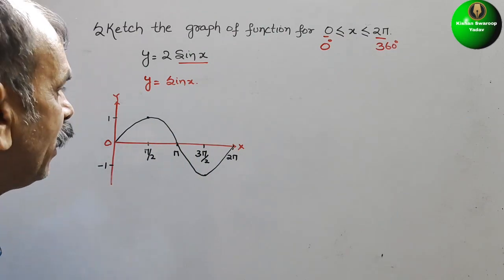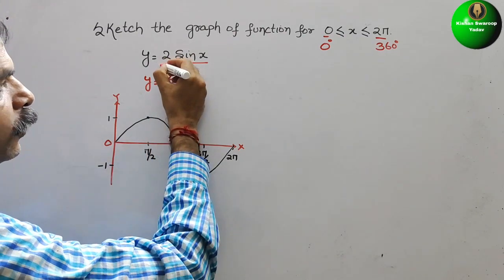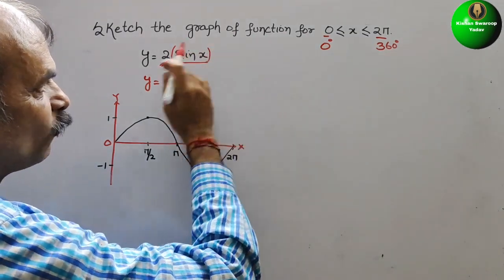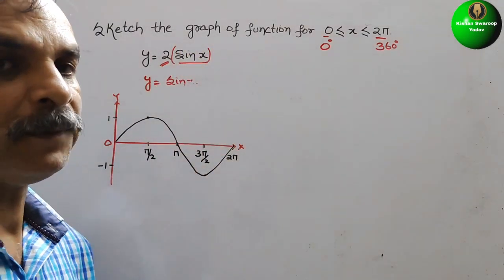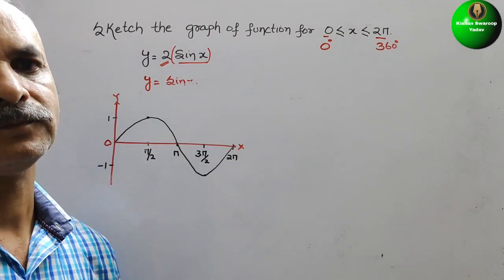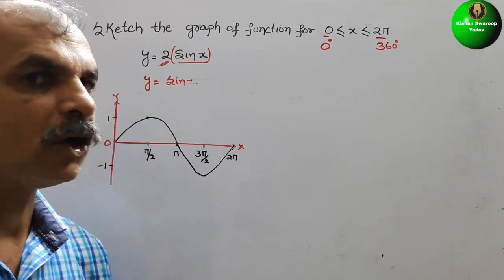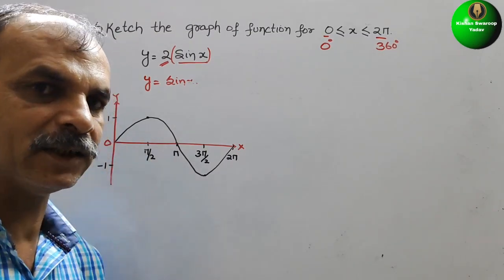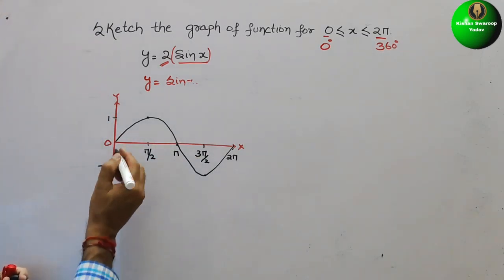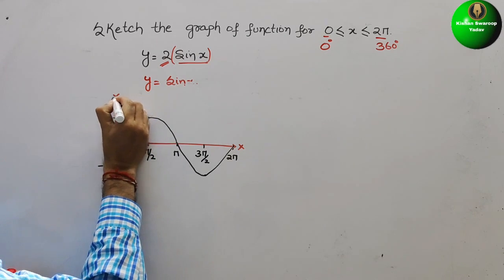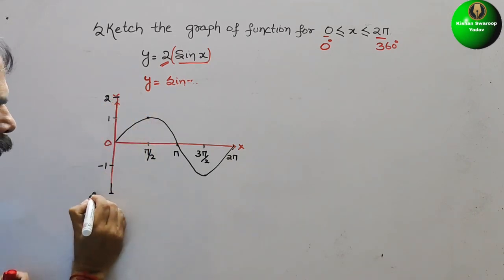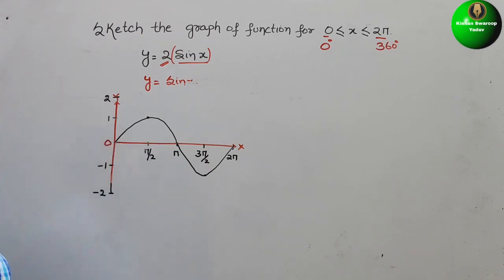Now what they have told? They have told 2. That means if you put a bracket here, what does it mean? It means that it will amplify your sine wave. That means your amplitude will get increased. So now how it will be? Here it is your 1. Therefore here it will be your 2. And here this is your minus 2. Your amplitude get increased.